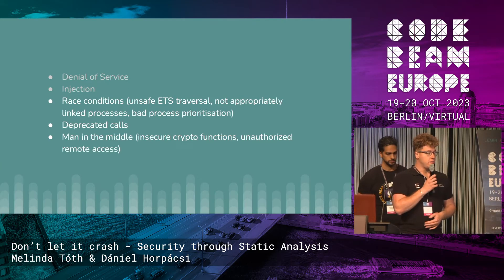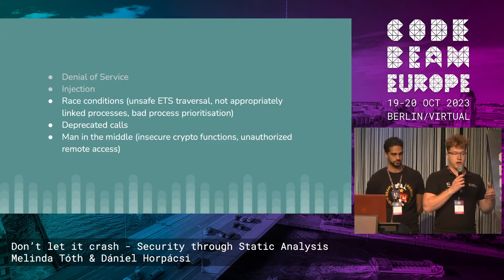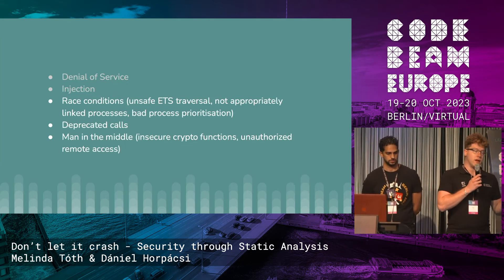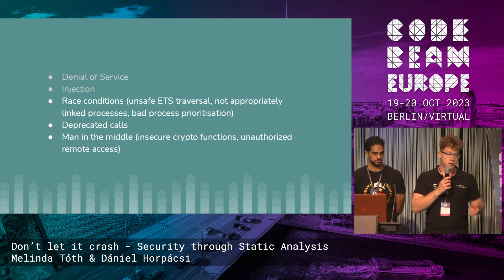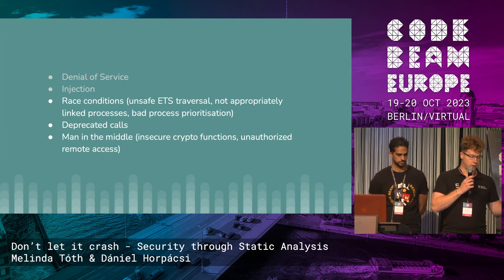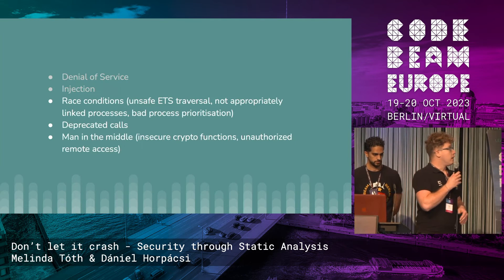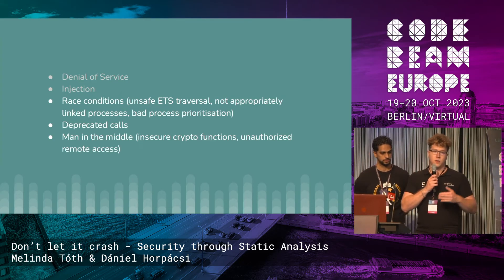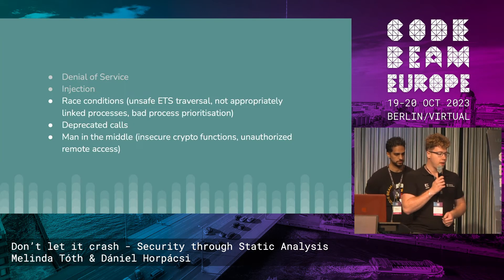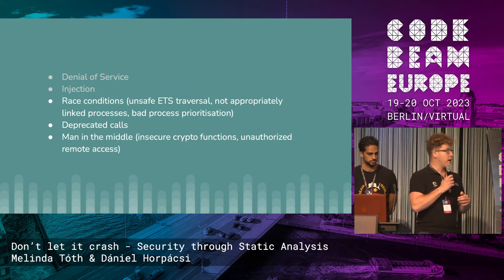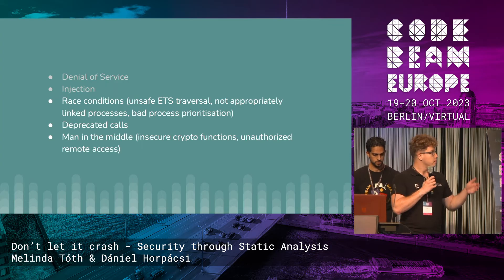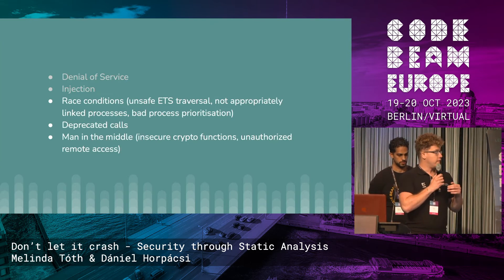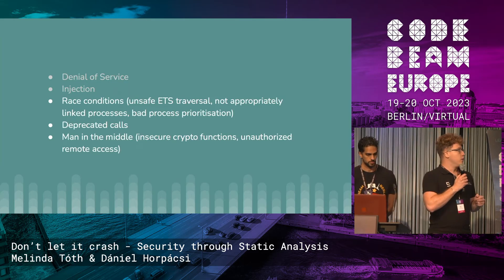But not just these categories are present. We have race conditions — for example, when you traverse an ETS table without first locking it, or when you spawn a process and then try to link it, which can lead to race conditions since process linkage should be an atomic operation. Another category is man-in-the-middle: when you have an unsecured crypto function and establish your connection with that, which gives the possibility for a man to step in the middle. The last one is when you have a badly configured node with a remote connection, which can give someone access to even your machine, not just your node.